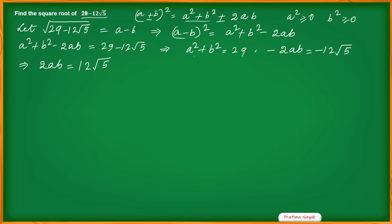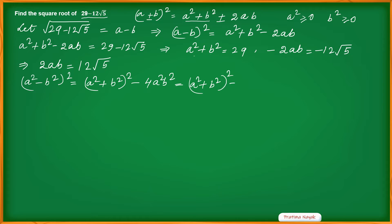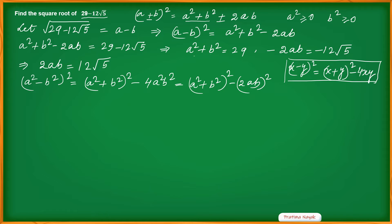I am writing: (a squared minus b squared) whole square equals (a squared plus b squared) whole square minus 4 times a squared b squared. This uses the familiar formula (x minus y) squared equals (x plus y) squared minus 4xy, where x equals a squared and y equals b squared. So (a squared minus b squared) squared equals 29 squared minus 4 times (ab) squared, where ab squared gives 12 root 5 squared.